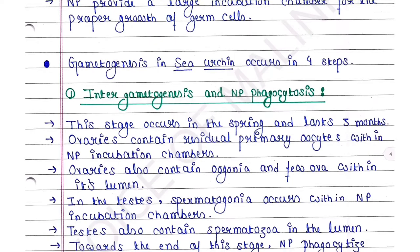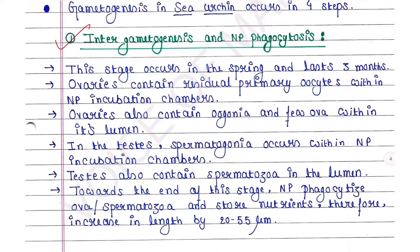Gametogenesis in C. arching occurs in four steps. Step 1 is inter-gametogenesis and NP phagocytosis. This stage occurs in the spring and lasts three months. Ovaries contain residual primary oocytes within NP incubation chambers, and also contain oogonia and few ova within the lumen. In the testes, spermatogonia occurs within NP incubation chambers. Towards the end of this stage, NP phagocytes phagocytize ova or spermatozoa, and stored nutrients increase NP length by 20 to 55 micrometers.